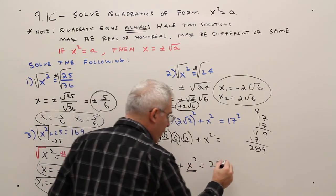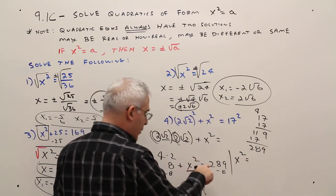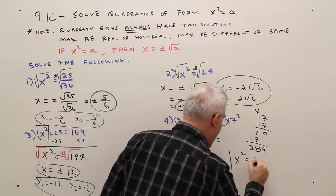So I'll go minus 8 here and minus 8 here. I'll get X squared equals 281.